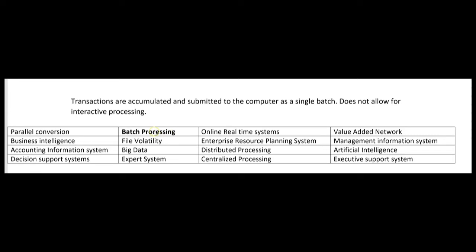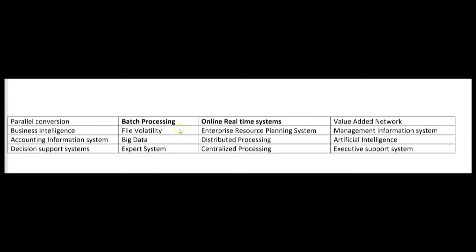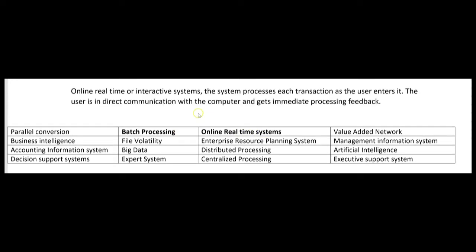Batch processing is where transactions are accumulated and submitted to the computer as a single batch. It does not allow for interactive processing because we're not processing each transaction in real time. There's often a time delay between when a transaction happens and when the master files are updated. Online real-time systems, sometimes called interactive systems, process each transaction as the user enters it — the user is in direct communication with the computer and gets immediate processing feedback. That's just the opposite of batch processing.